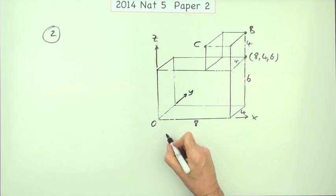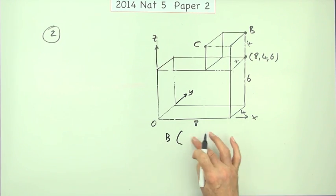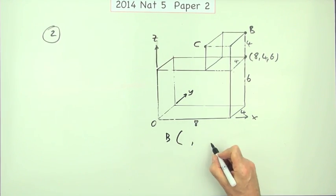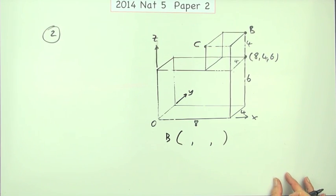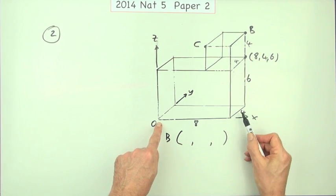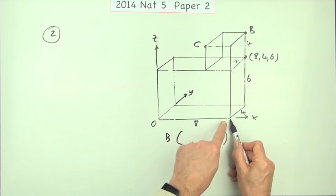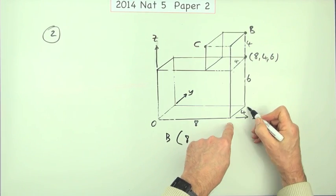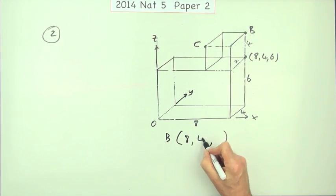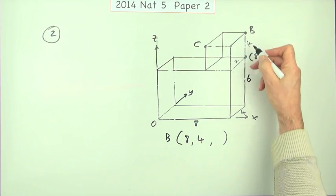And that's all you need now to get the points. So B—remember you write them across the way for coordinates, down the way for vectors at this level. So how do I get to B from the origin? Well I have to go all the way along because it's at the far away corner. I go 8 along, all the way back because it's at the back so that's 4, and all the way up so 6 and 4 is 10.